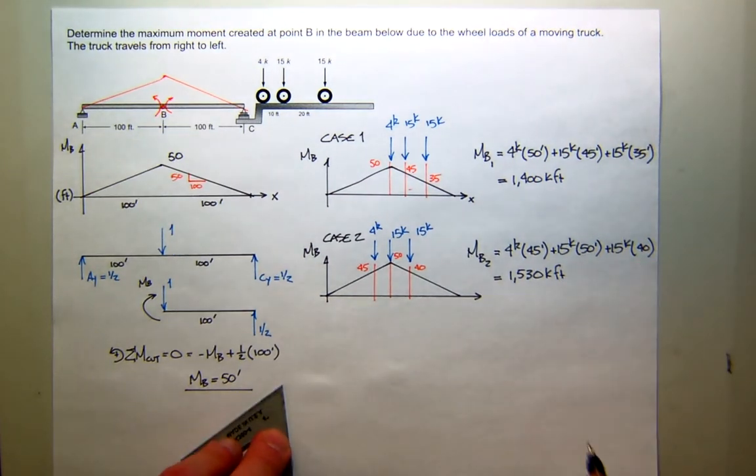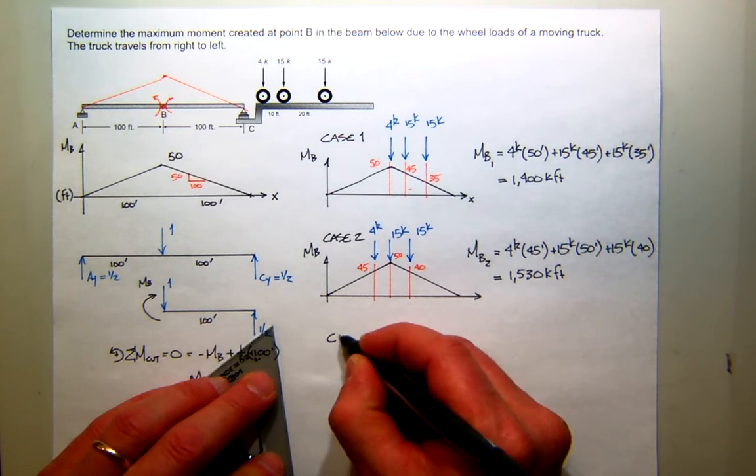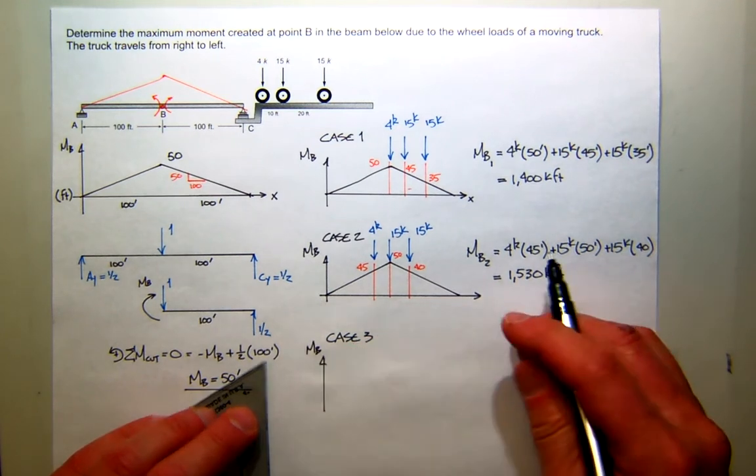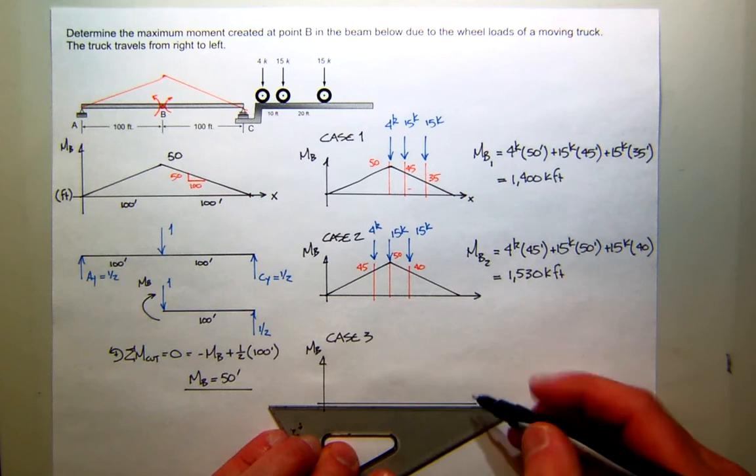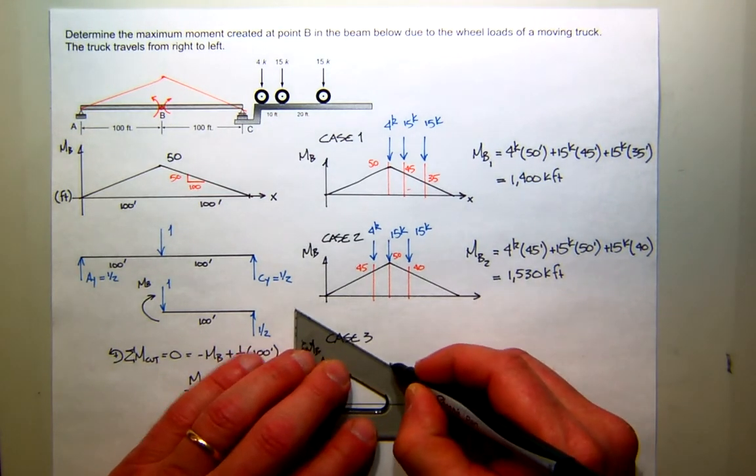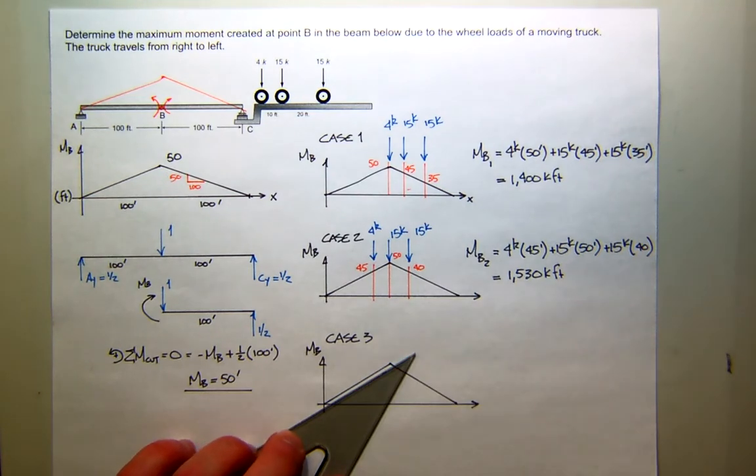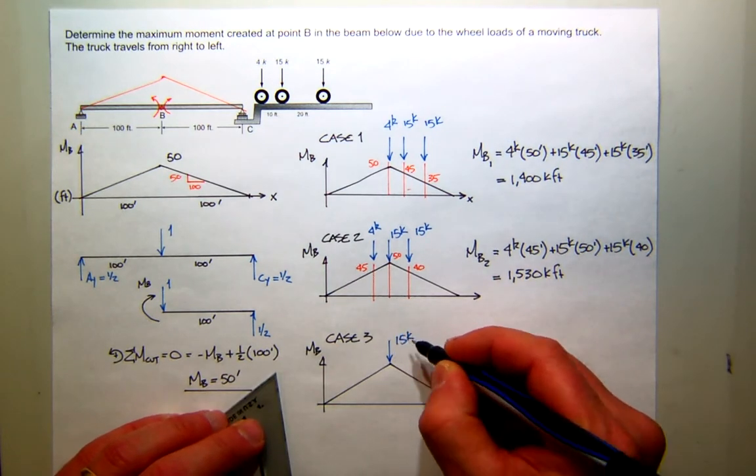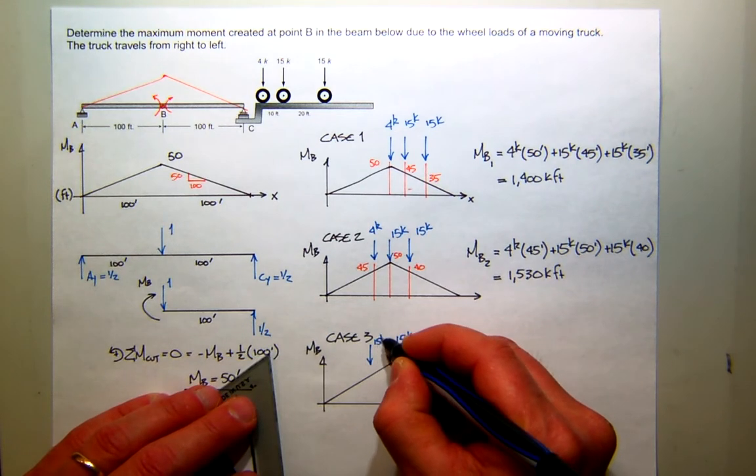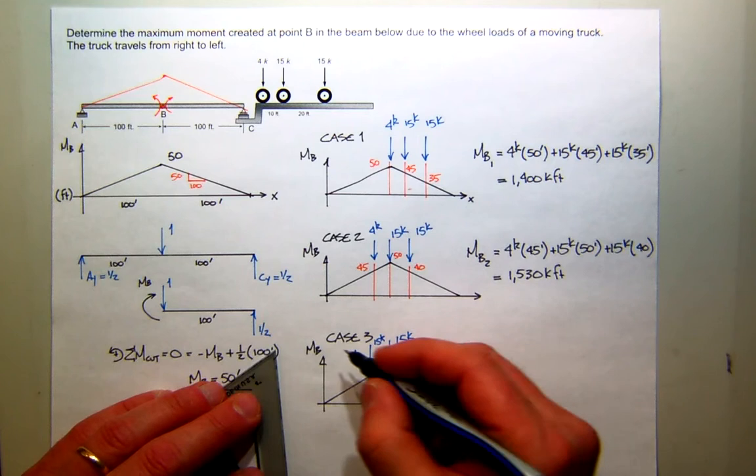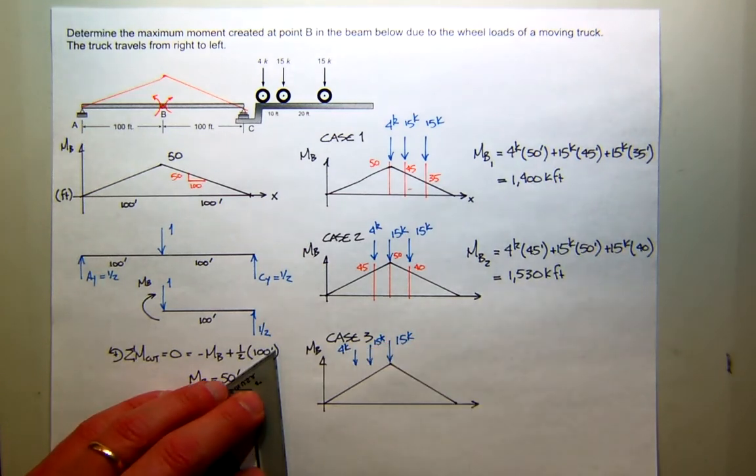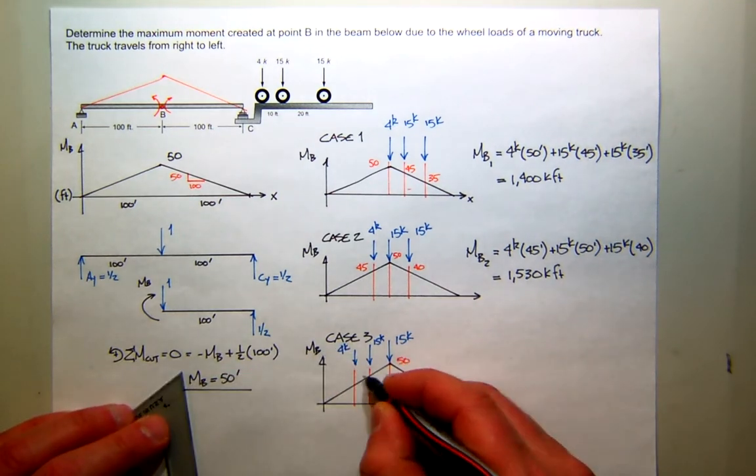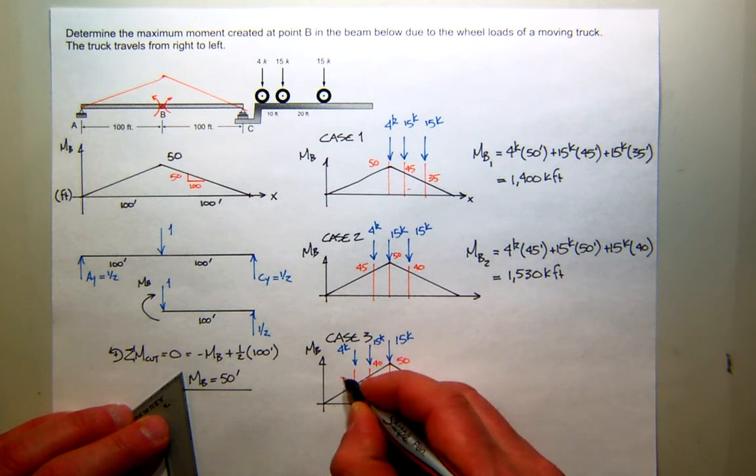We've got one more try. This would be case 3. Again, I'll just sketch the influence line for the moment at B. And now, we'll look at our truck, again, moving from right to left. Now, the rear 15 kip force is there. 20 feet here would be the other 15, and then another 10 feet would be the 4 kip. I need these three values. This is 50. Move 20 feet forward, that should be 40. And this should be 35.